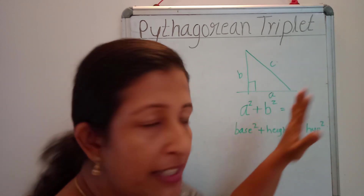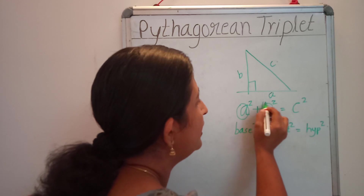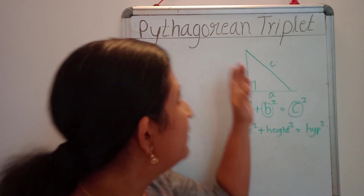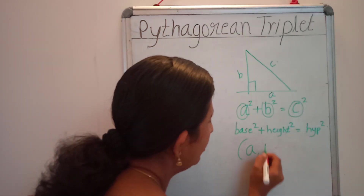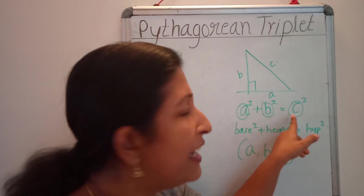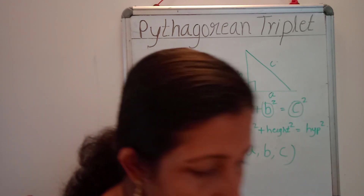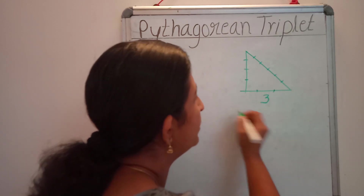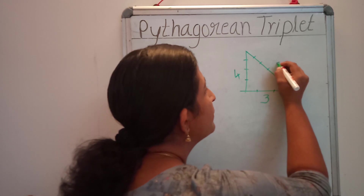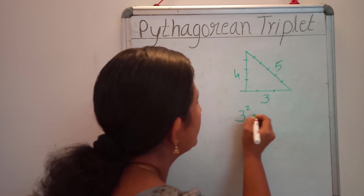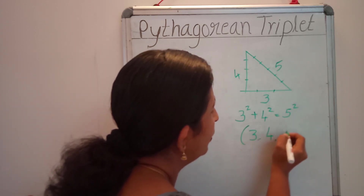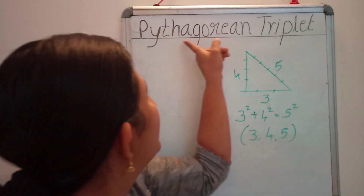Pythagorean Triplet is nothing but the values of A, B, and C that we discussed in Pythagoras theorem. The values A, B, C are called a Pythagorean Triplet, and they must satisfy A square plus B square equal to C square. For example, the base is 3 units, height is 4 units, and the hypotenuse will be 5. That is, 3 square plus 4 square equals 5 square. So, 3, 4, and 5 are Pythagorean Triplets.